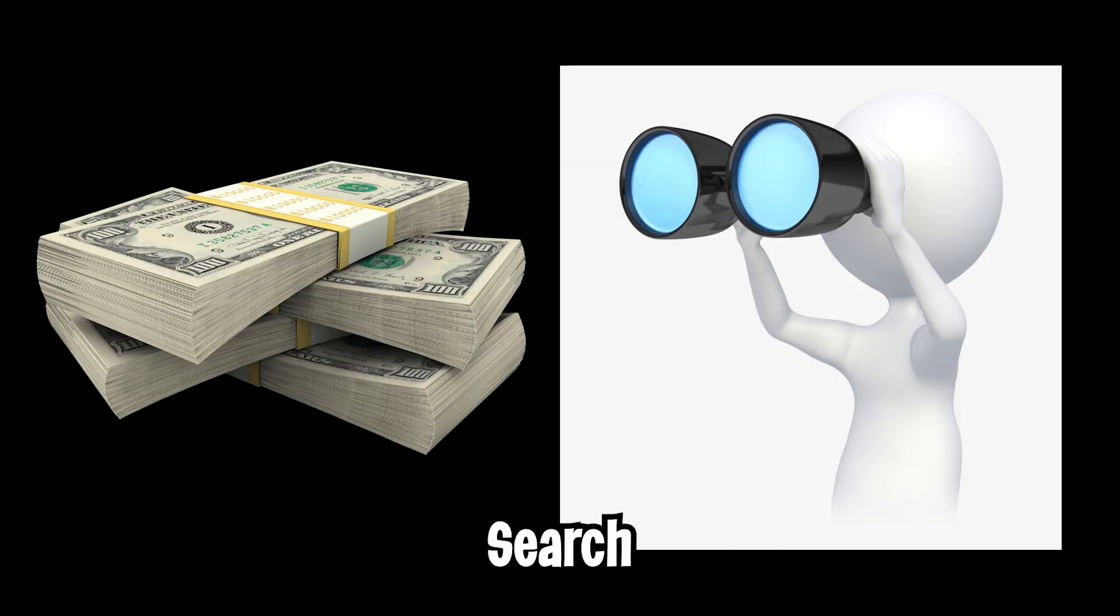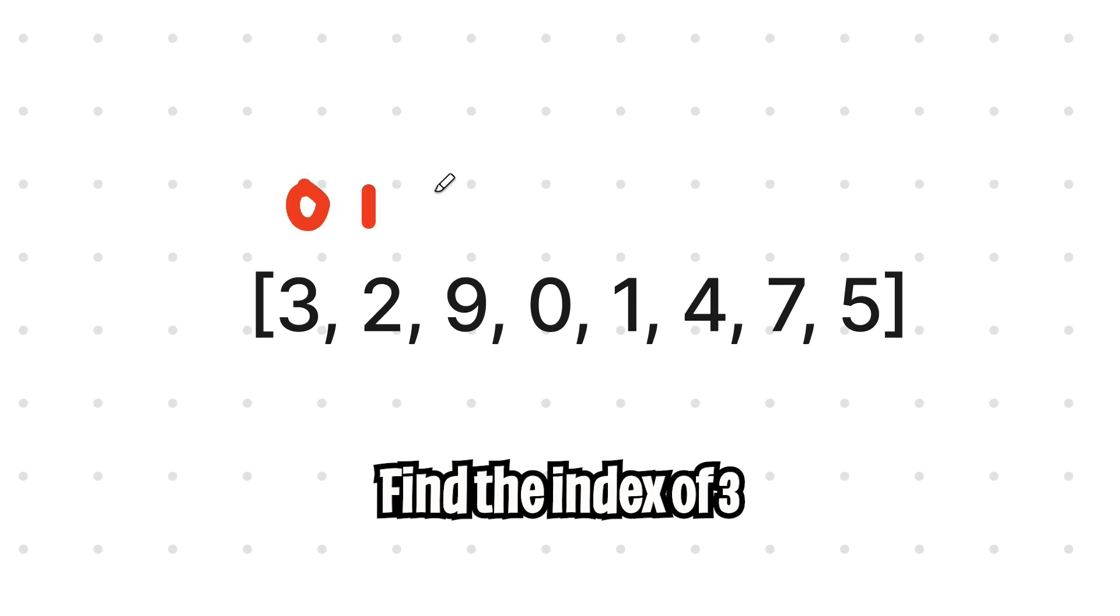A common problem in computer science is searching. So let's say you're given a list of numbers like this, and I asked you to find me the index where 3 exists. How would you write a program to do this?